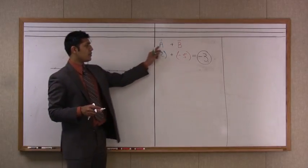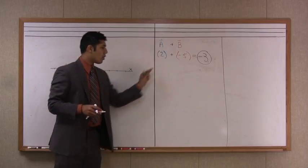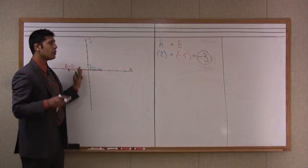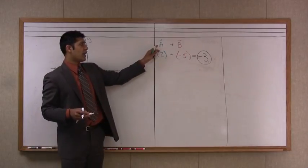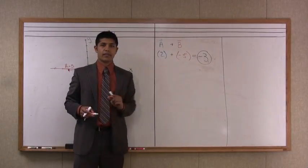So whether we just did a substitution for our values, or if we use the head-to-tail method, we should still get the same answer that vector a plus vector b is negative three.